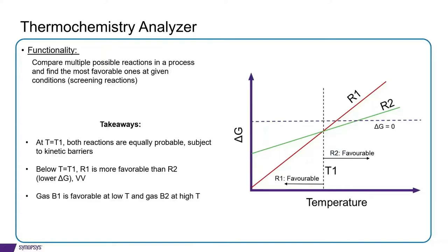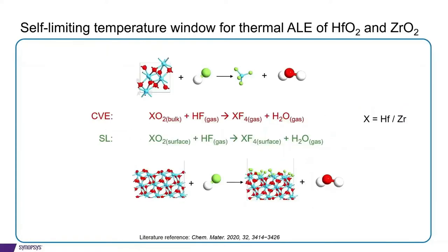Let's look at an example. We look at self-limiting temperature window for thermal ALE of hafnia and zirconia based on the literature discussed below. There are two reactions, an etch reaction and a self-limiting reaction.